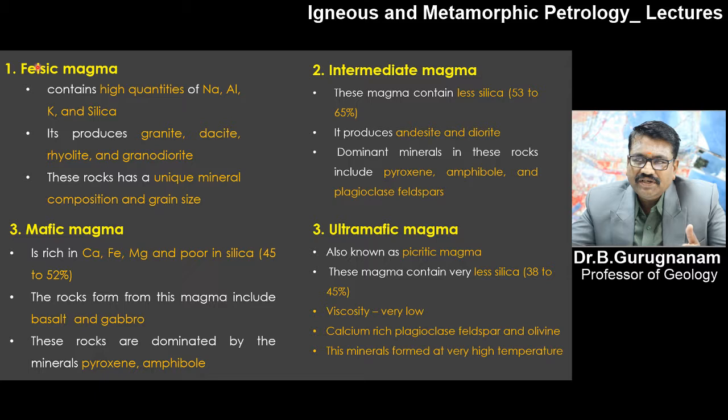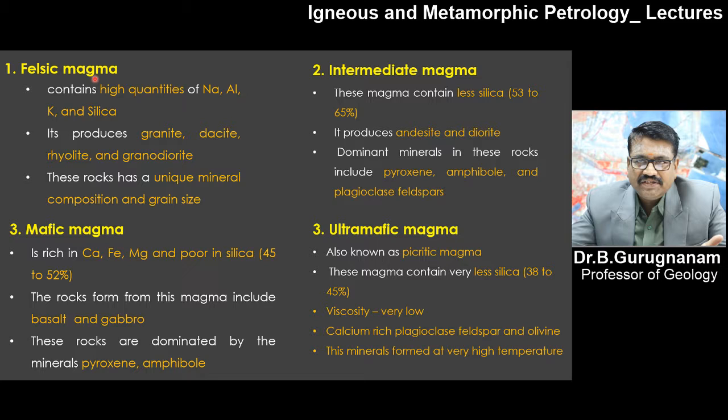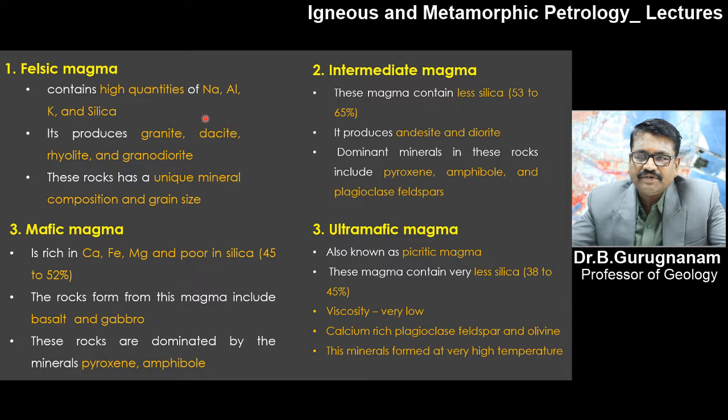Felsic magma is one which has high quantities of sodium, aluminum, potassium, and silicate. The percentage of silica is more than 65% in felsic magma. The end products of this high-silica magma include granite, dacite, rhyolite, and granodiorite — these are the commonly found end products from felsic magma.